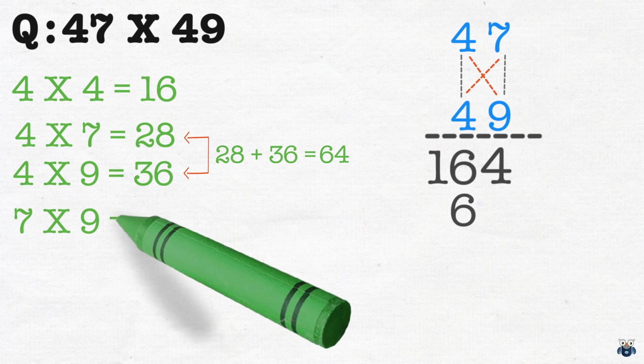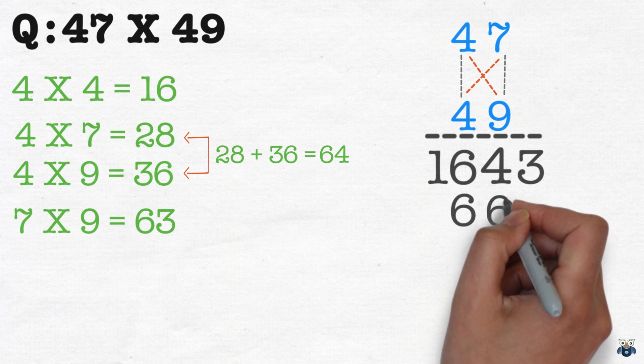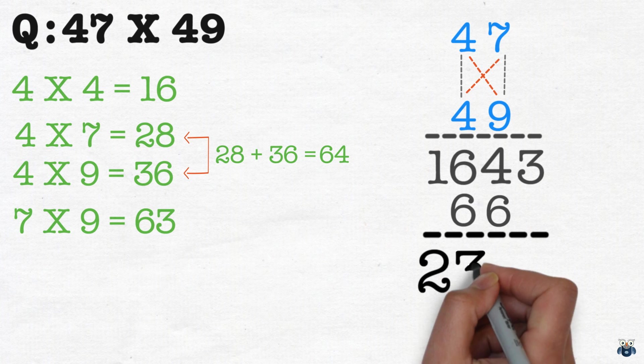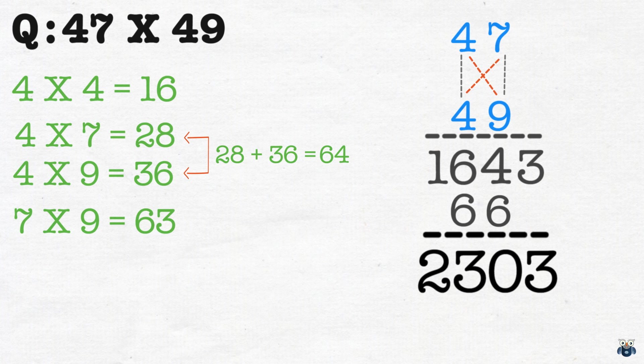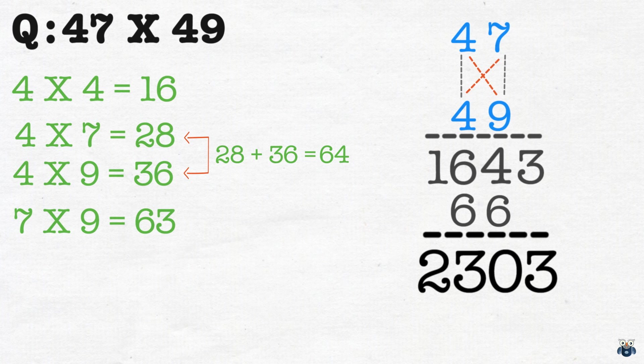Finally, we multiply the rightmost digits. 7 times 9 is 63. And yes, we write down the 3 and carry over the 6. Adding together our digits, we get 2303. But is this correct? Let's quickly find out. This is indeed the correct answer.